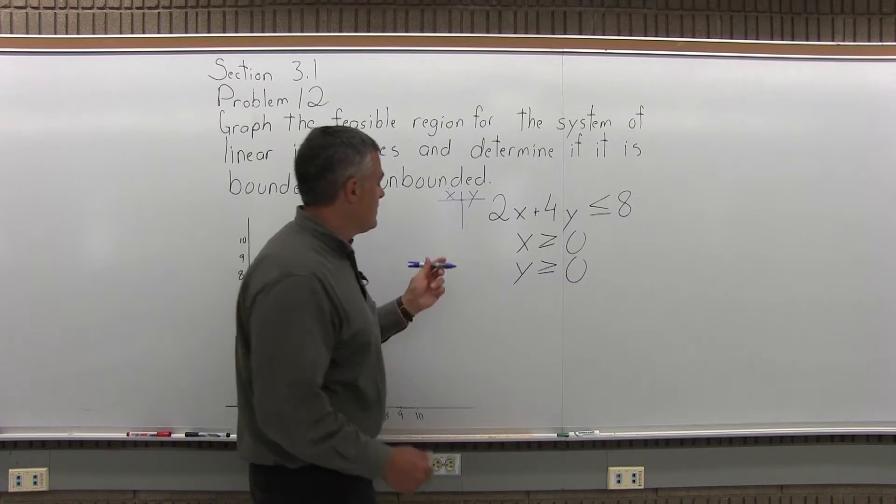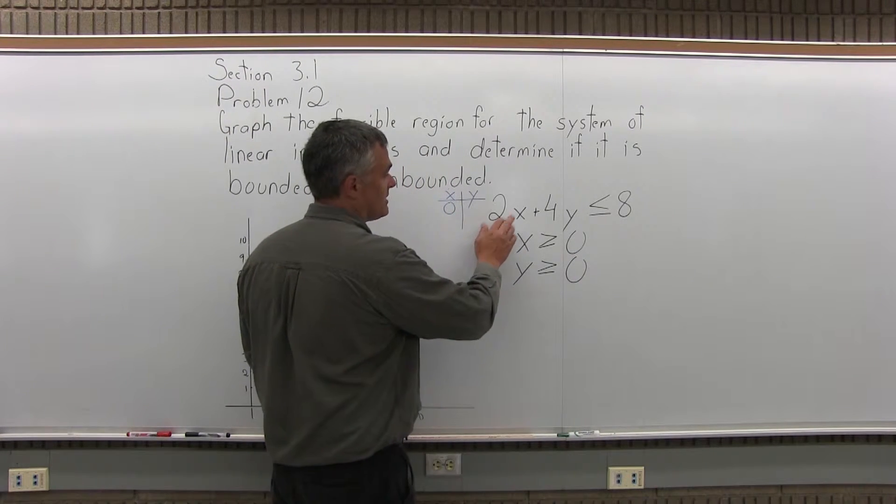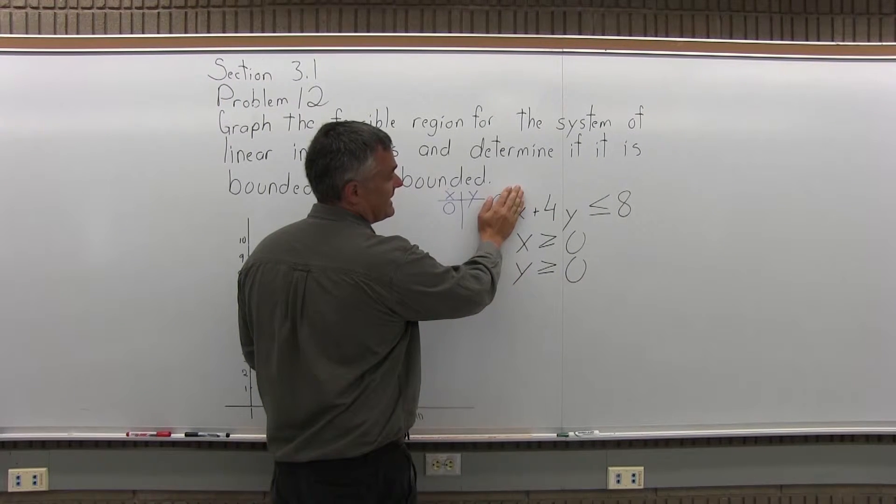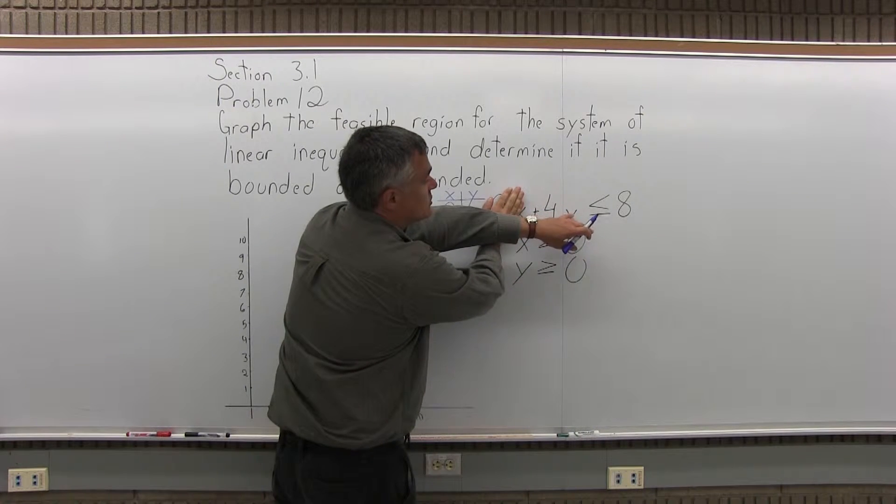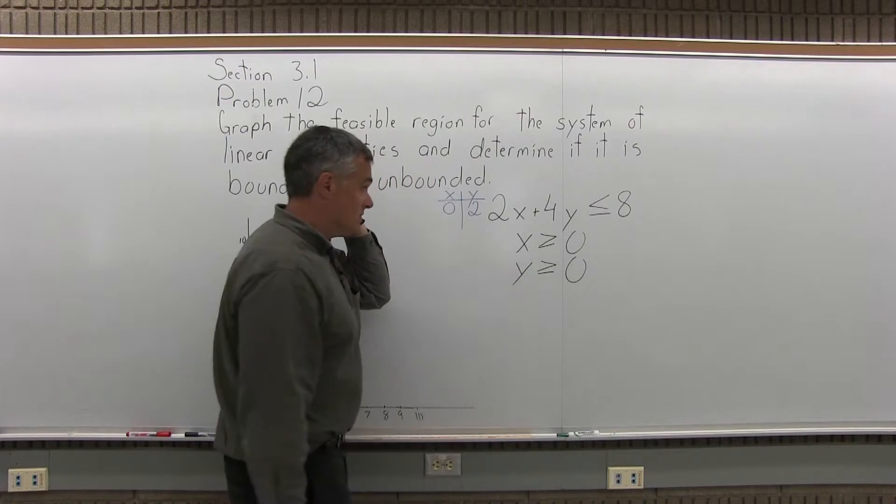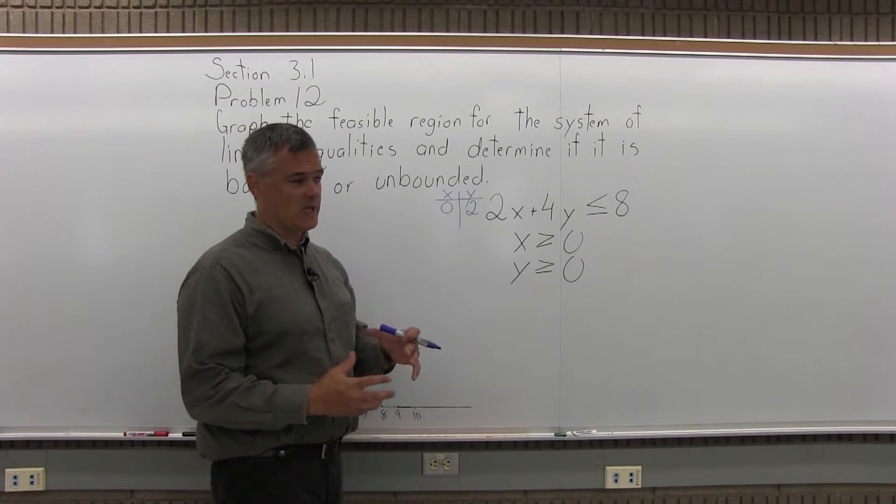First, I'm going to let x equals 0 and solve for y. If x is 0, 2 times x becomes 2 times 0, it's gone. I have the equation 4y equals 8, y must be 2. 4 times 2 would make 8 equals 8. So 0, 2 is one point that would make the equation true, if I'm pretending I have an equation.